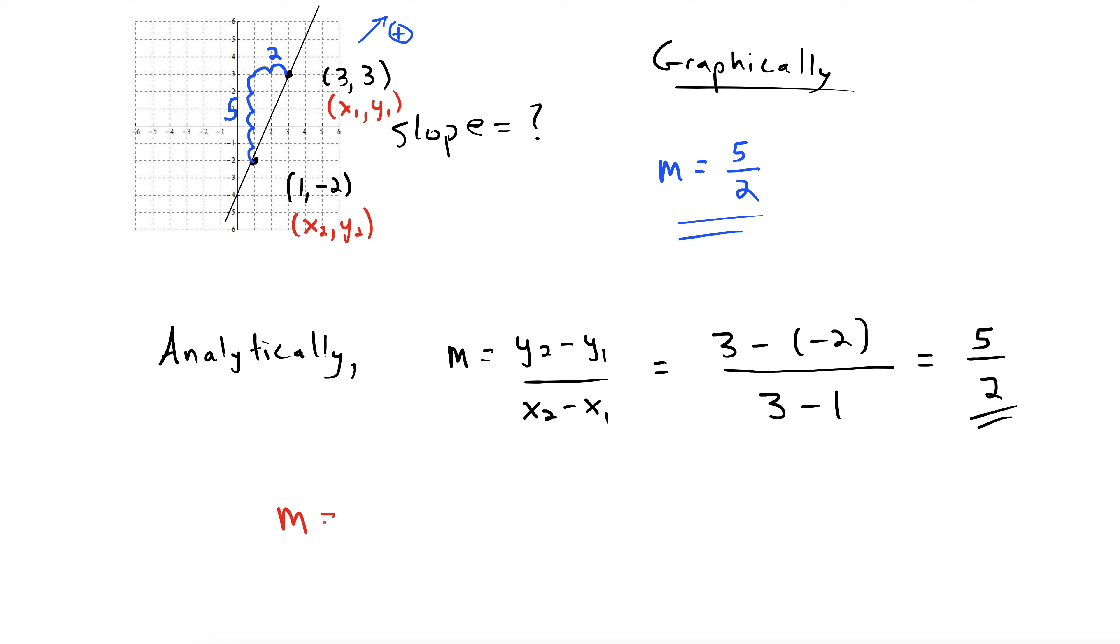So it would be y2 minus y1. So negative 2 minus 3 divided by x2 minus x1. 1 minus 3. All right, well, negative 2 minus 3 is negative 5 divided by 1 minus 3, negative 2. Oh, look at that. 5 halves again.